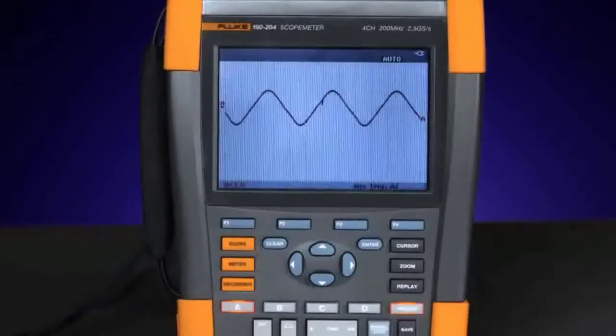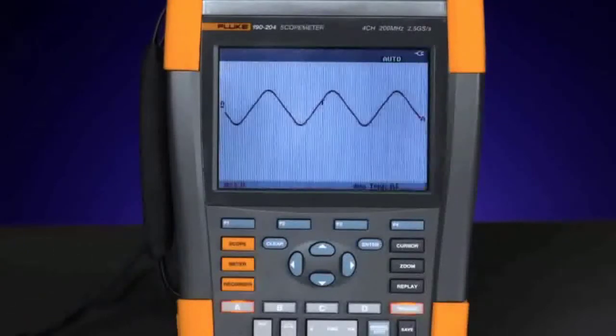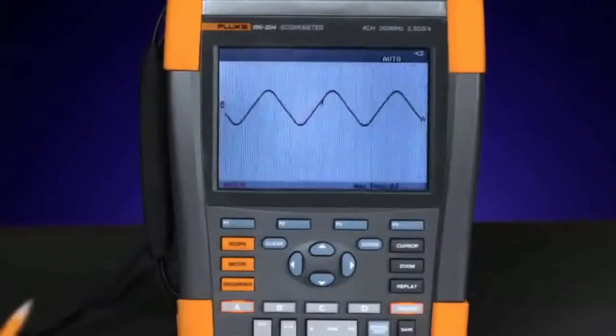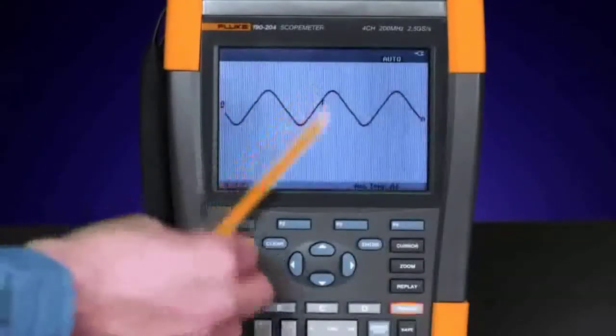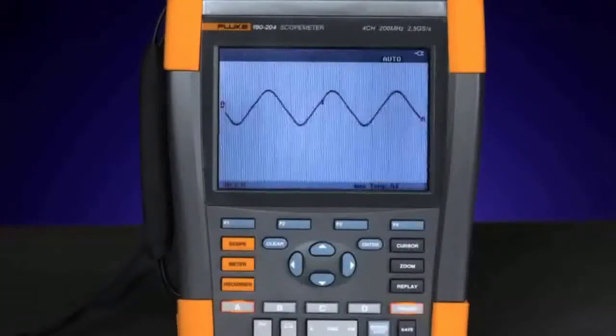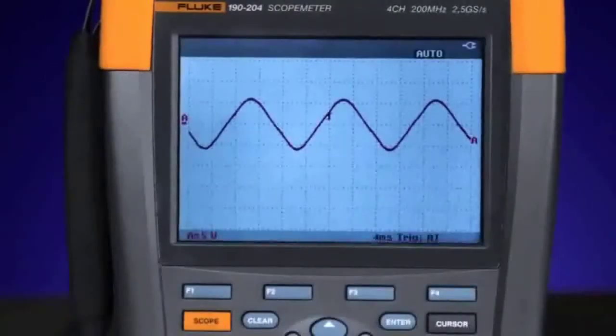The envelope is created on the screen and then the oscilloscope continues monitoring. Any event or anomaly that goes outside of that predefined envelope will be captured and stored in memory for you to inspect later. The first step to set up pass-fail test mode is to capture the known good waveform and create a reference envelope.